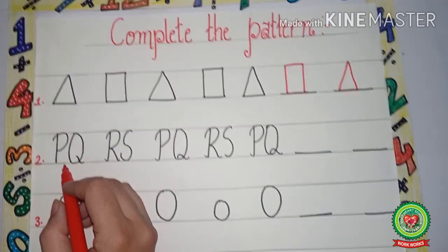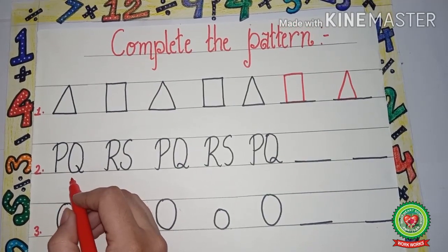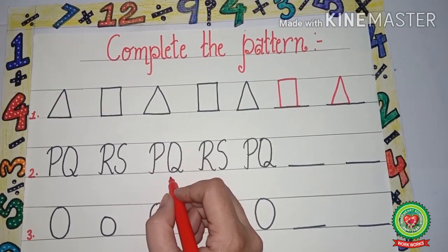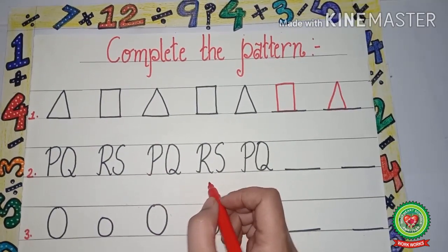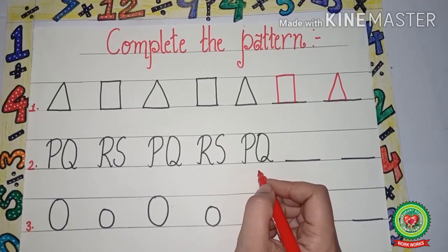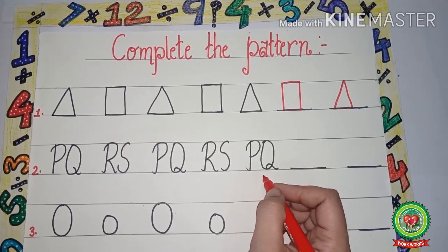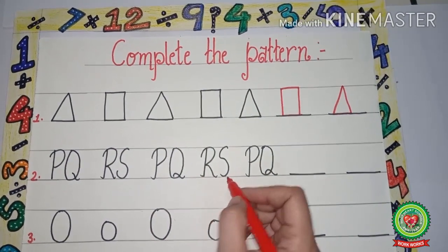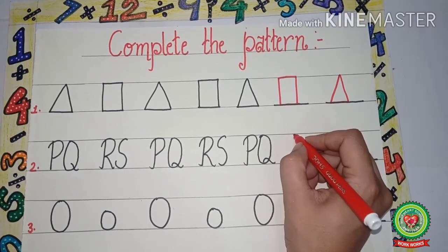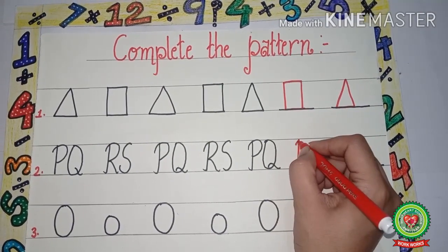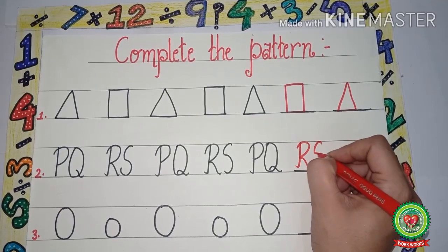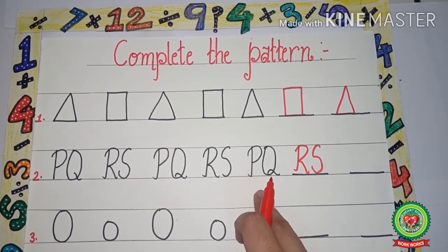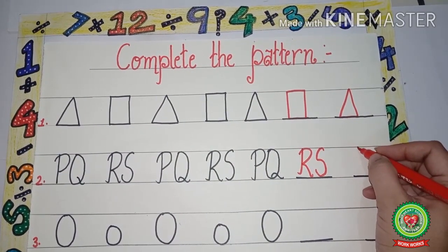Next is PQ, after PQ — RS, after RS — again PQ, RS, PQ. Now we have to complete the pattern. We will see what is coming after PQ — after PQ, RS is there, so we will write RS here. Now again after RS what comes — PQ — so we will write PQ here.